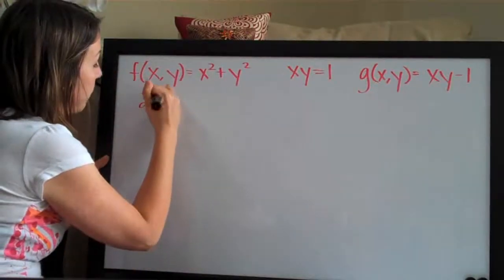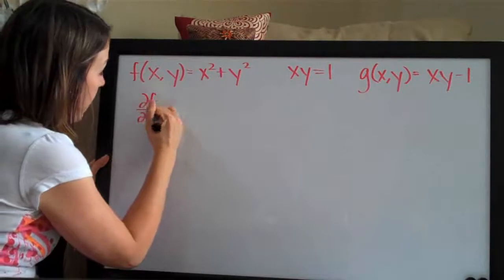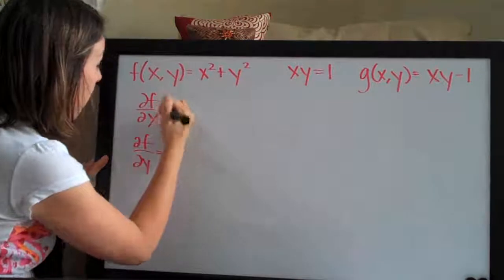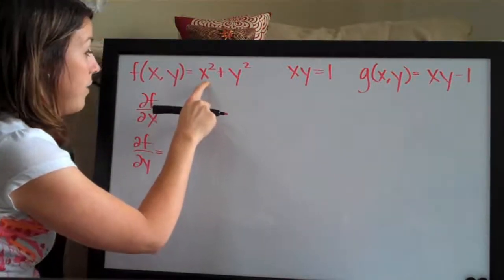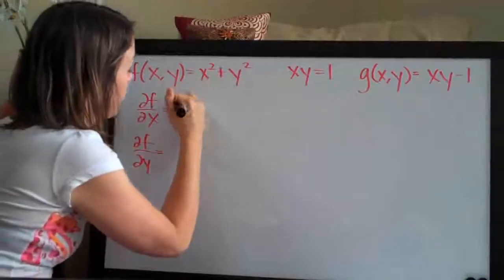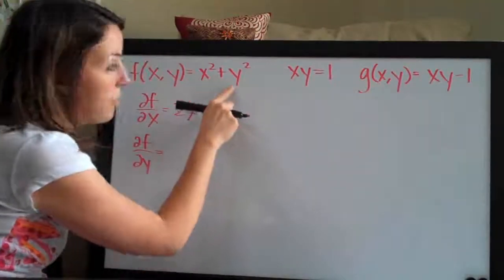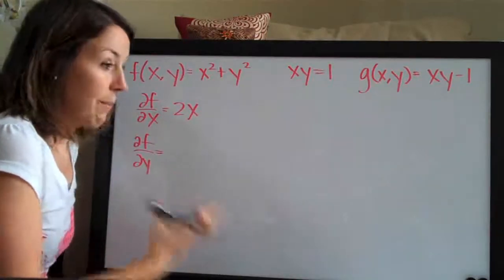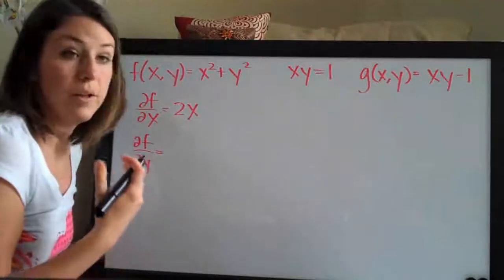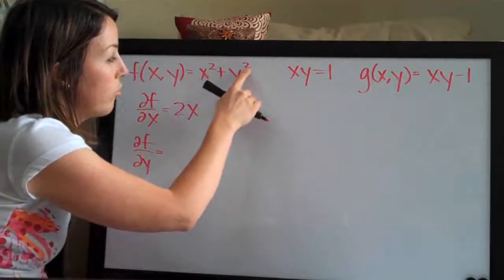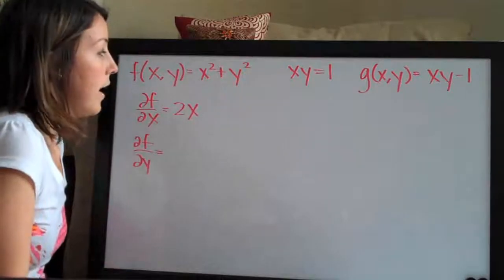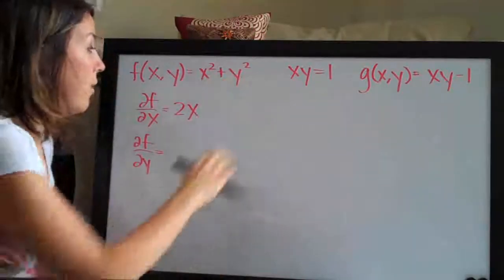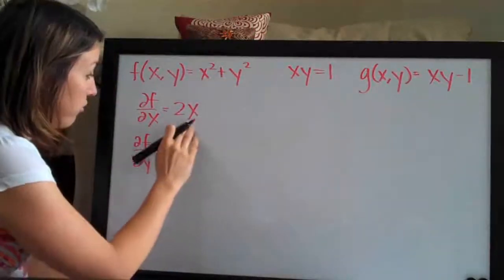First we're going to take partial derivatives of f with respect to x and y. With respect to x, the partial derivative of x squared is 2x. The y squared term goes away because we treat y as a constant — think of plugging in a number for y, say 2, which gives us a constant, and the derivative of any constant is 0. So the y squared cancels, and we get just 2x.